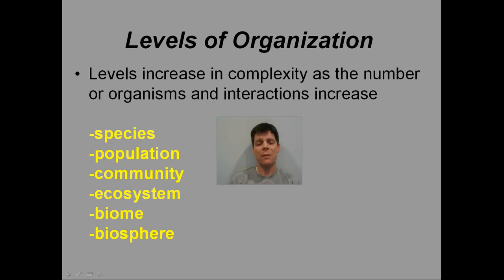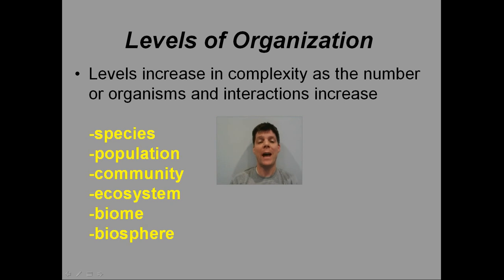There are six levels of organization in ecology, and as we look at these levels they're going to increase in complexity as we add higher numbers of organisms. When we have more organisms, that means there has to be a greater number of interactions. Starting from the least complex: species, then population, community, ecosystem, biome, and finally the biosphere, which is the level of organization with the greatest complexity.